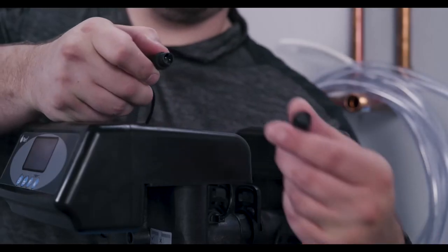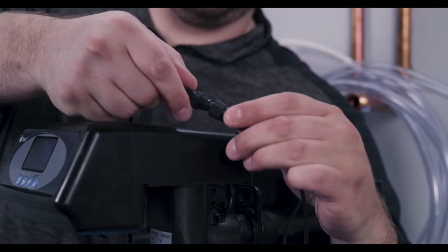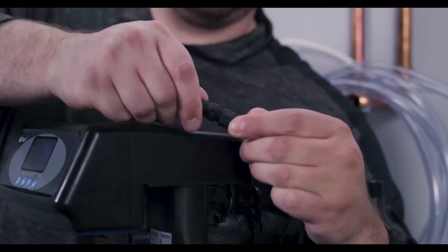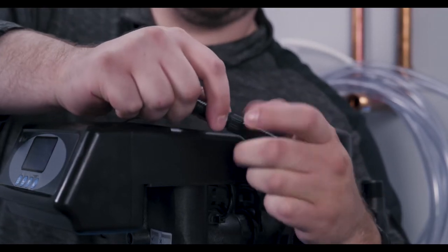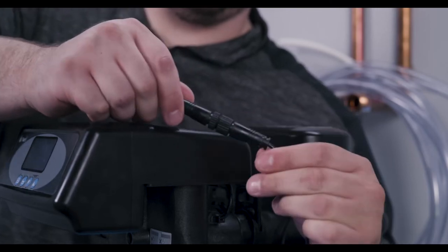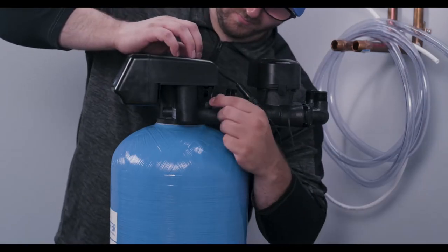Connect the signal wire ends of the control valve and the bypass valve and tighten the nut to secure it. Confirm the water meter probe is inserted in the probe port on the control valve.